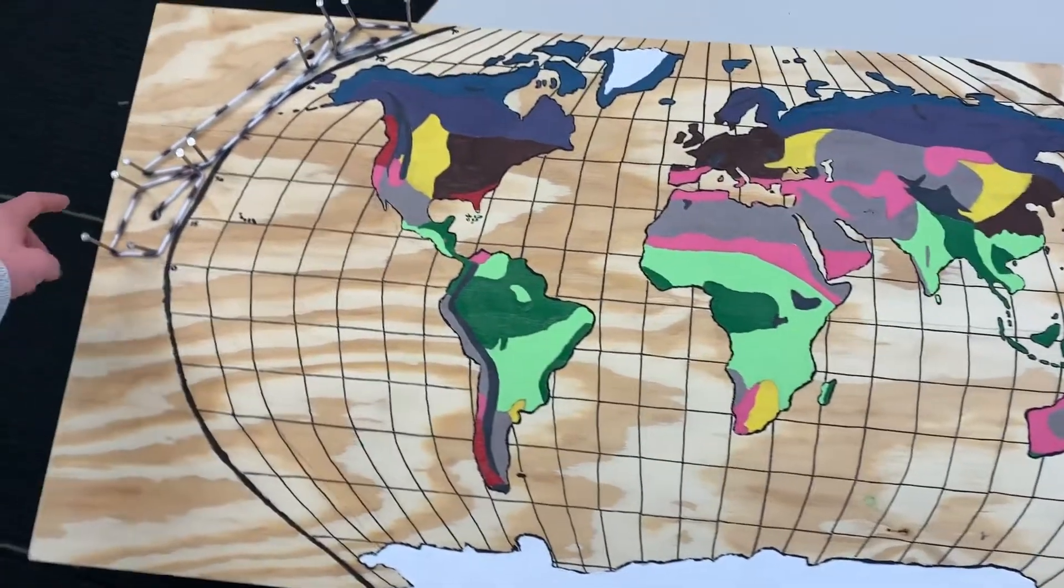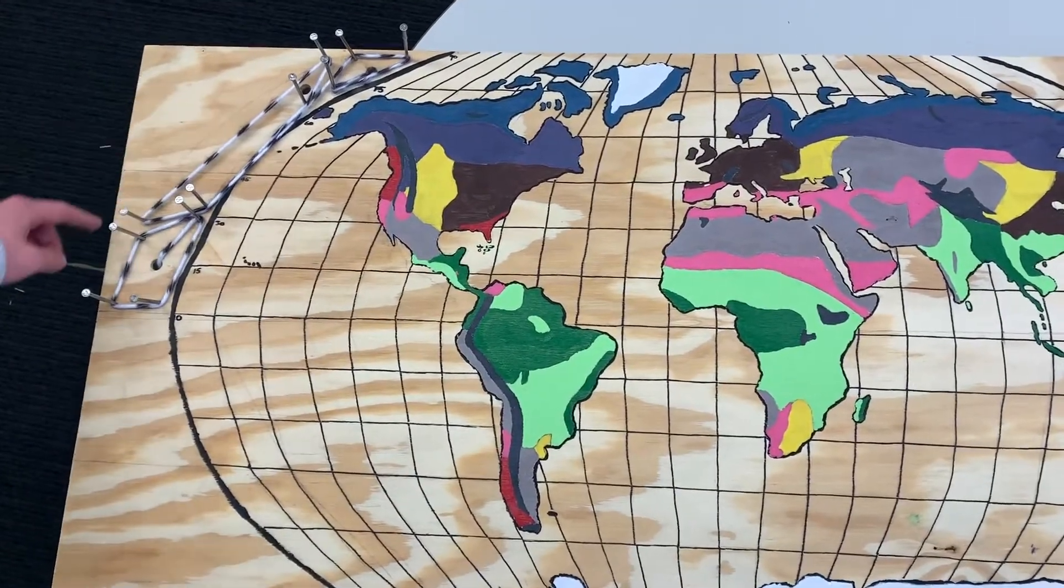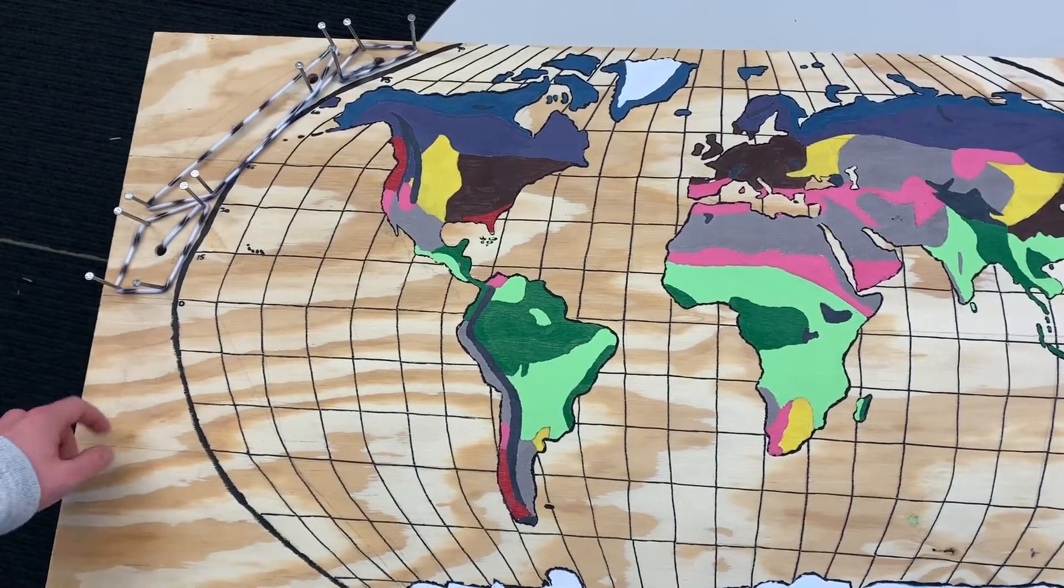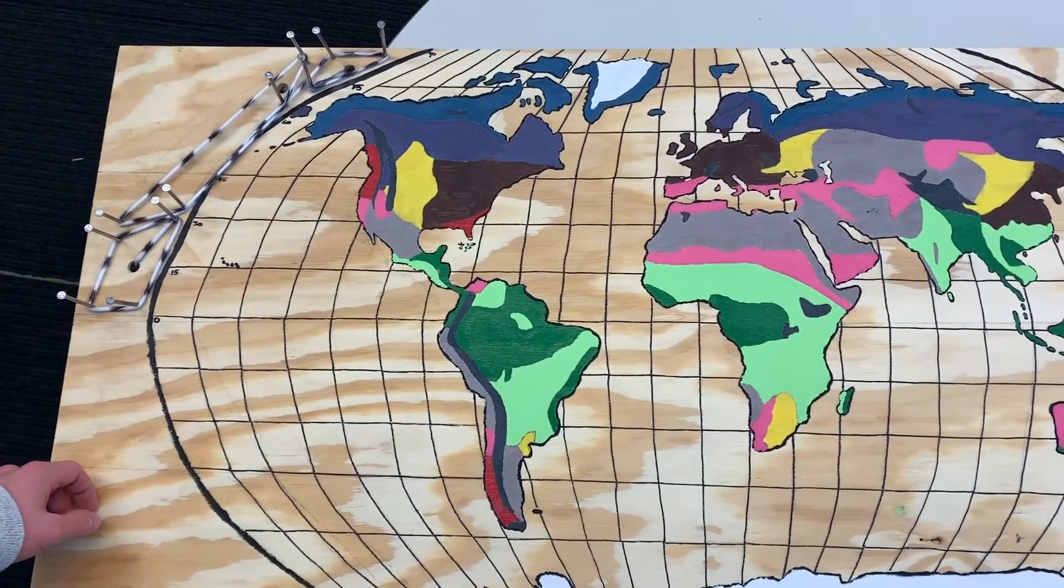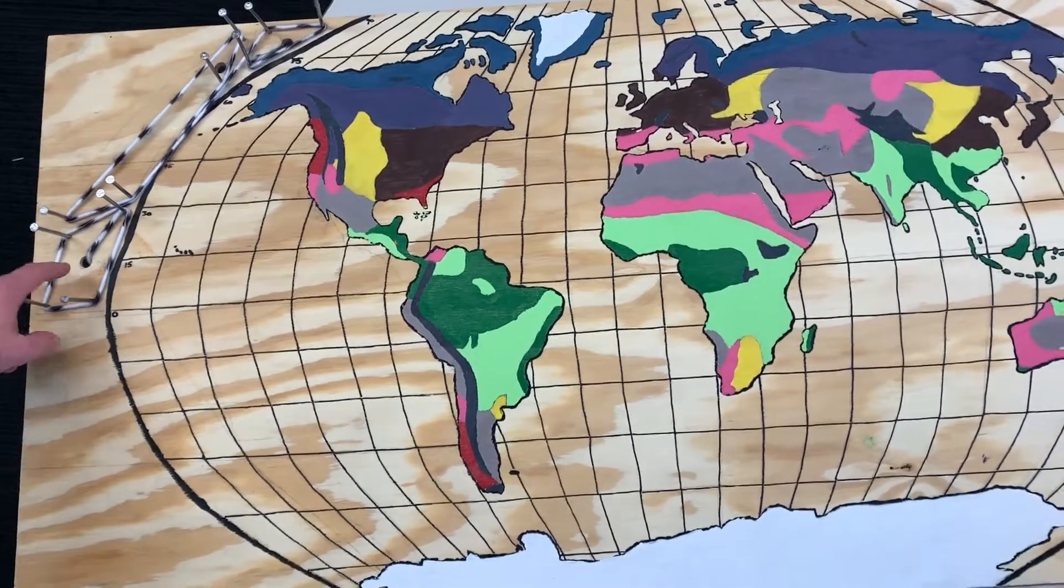If we pan over to the left of the map we will see this kind of strange looking contraption but this is actually one of the most vital things in determining the world's biomes. These are Hadley cells.